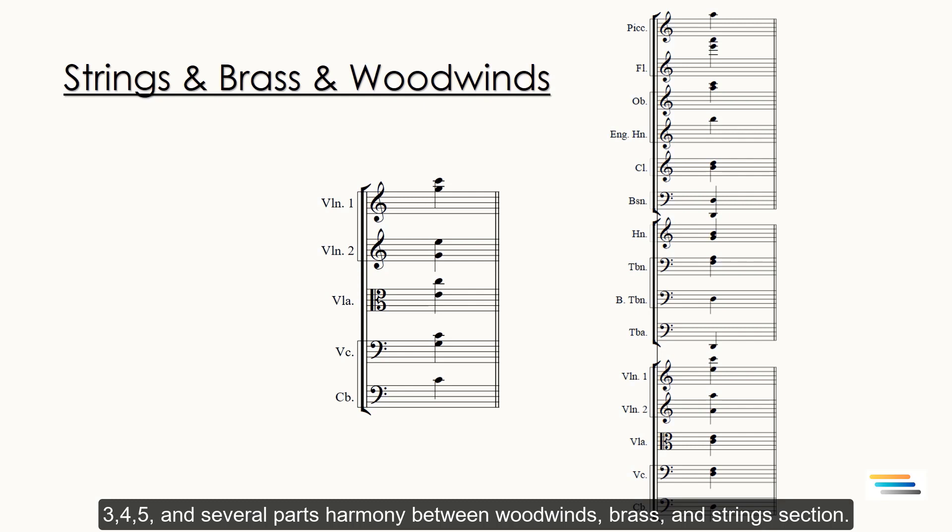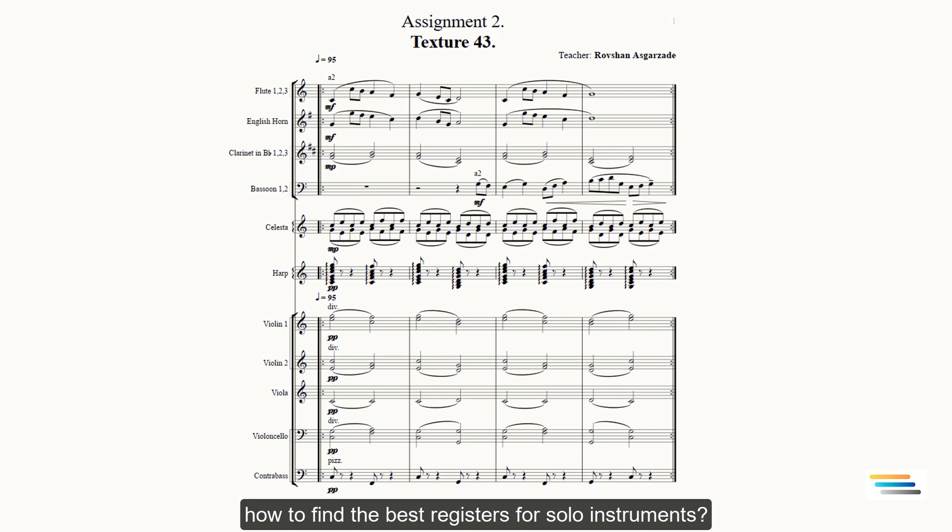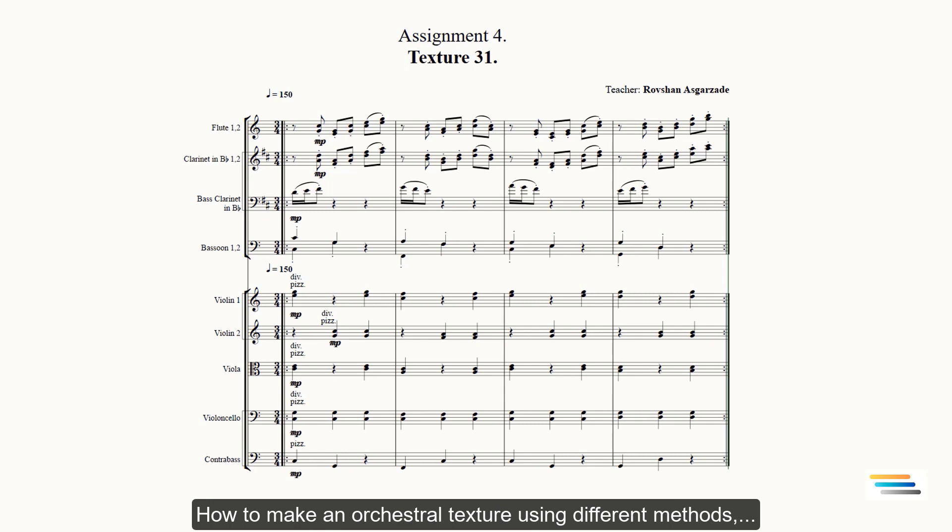Part 2: Orchestral Texture Making. This part will include lectures about how to find the best registers for solo instruments, how to use unison and octave doublings, how to apply warm, cold, and hot devices to your melody, how to make an orchestral texture using different methods like the spread, stretch, break, and so on.